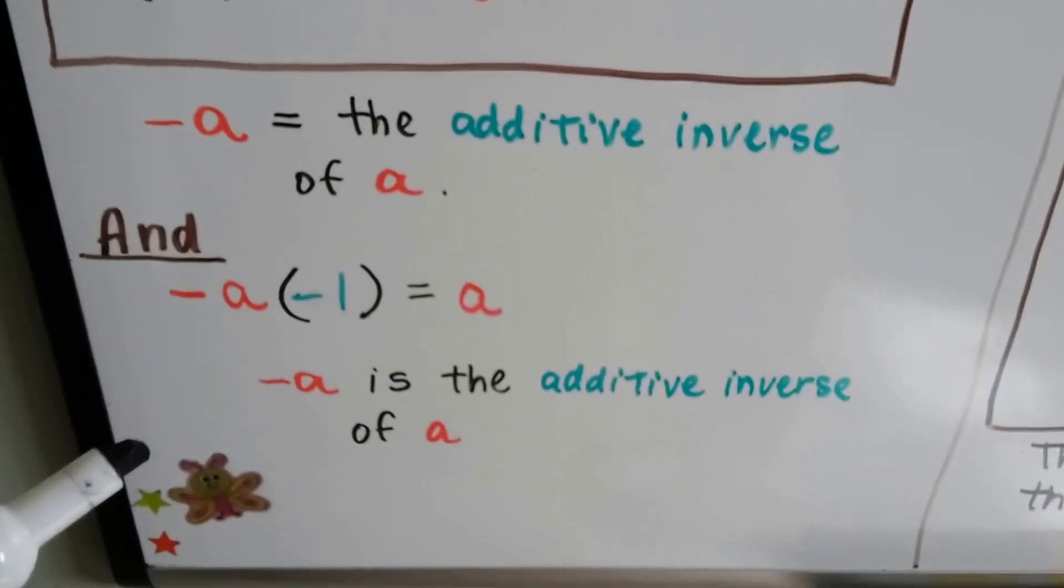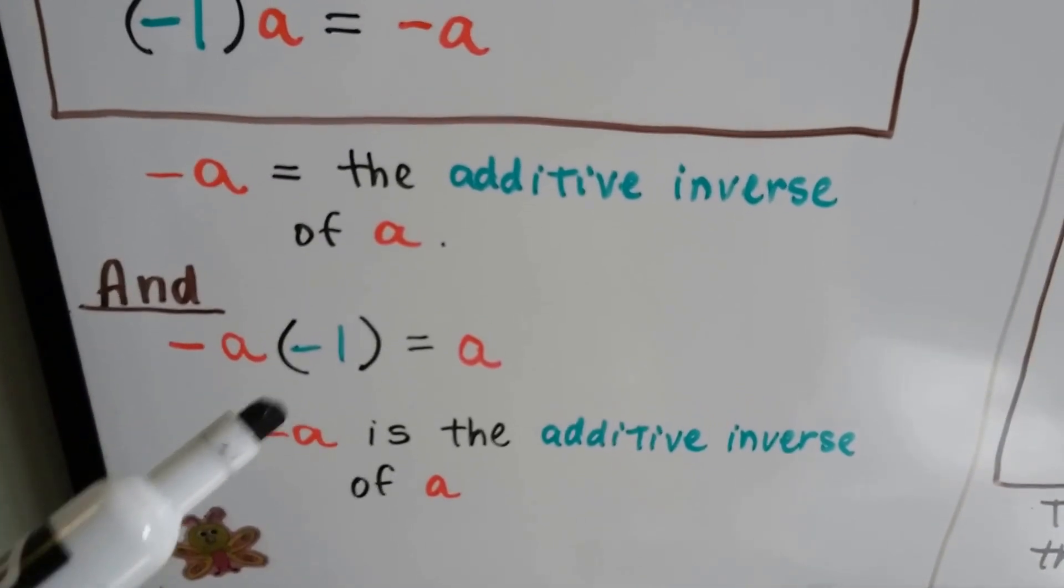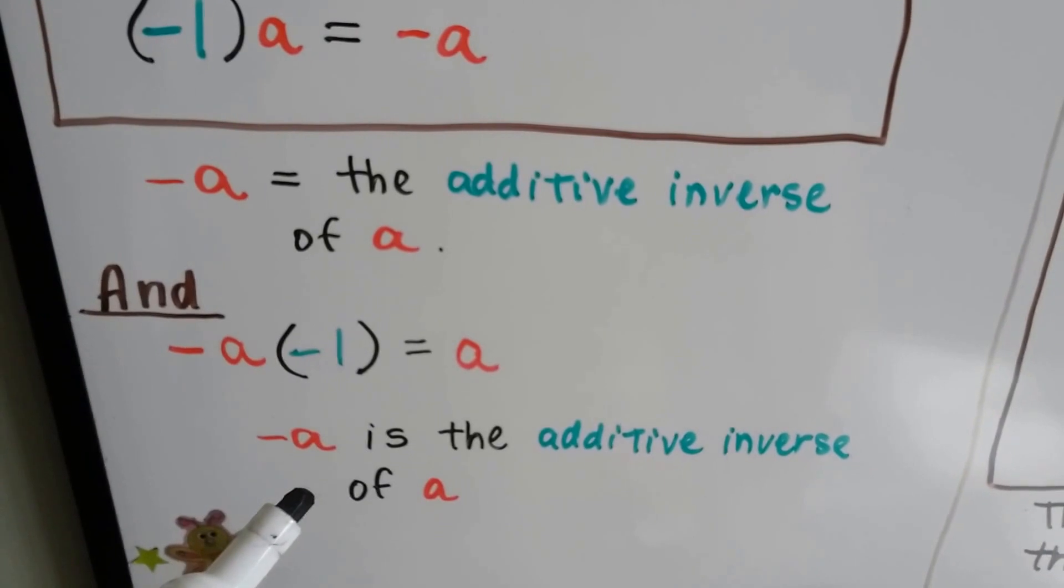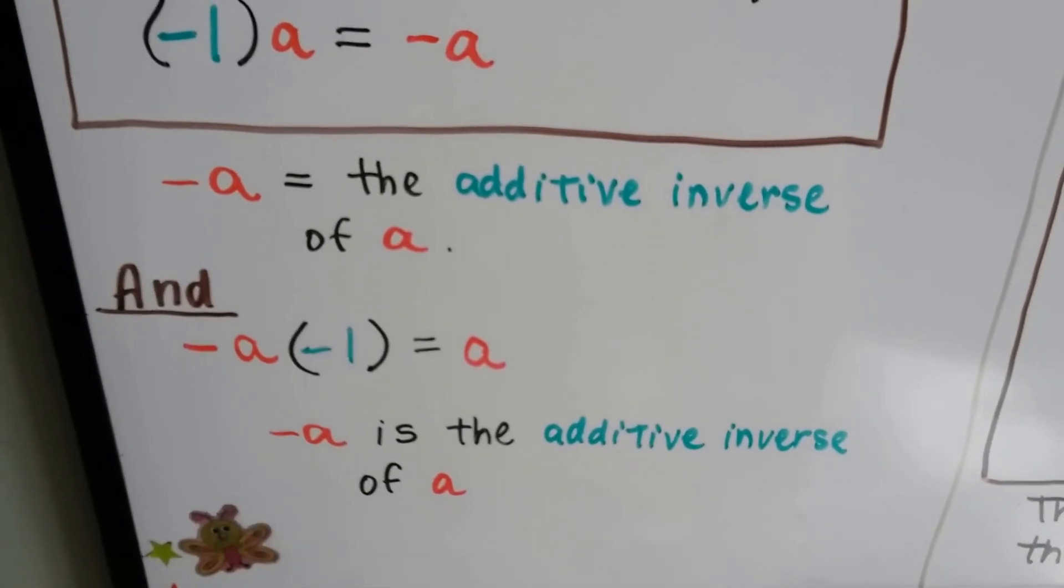And we can go the other way. If we have negative a and we multiply it by negative 1, it's going to bring us positive a. So negative a is the additive inverse of positive a.